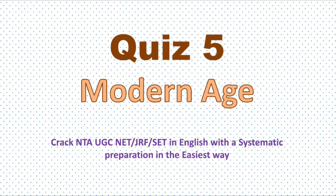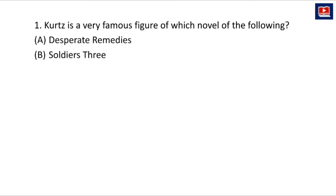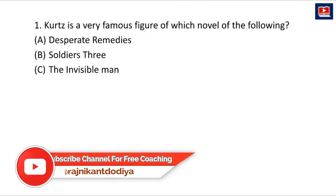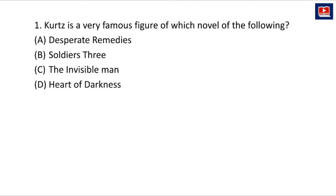Hello friends, once again we are here with a new video on Modern Age. This is quiz number five in the English Literature quiz series. The first question is: Kurtz is a very famous figure of which novel? The options are: Desperate Remedies, Soldiers Three, The Invisible Man, and Heart of Darkness.